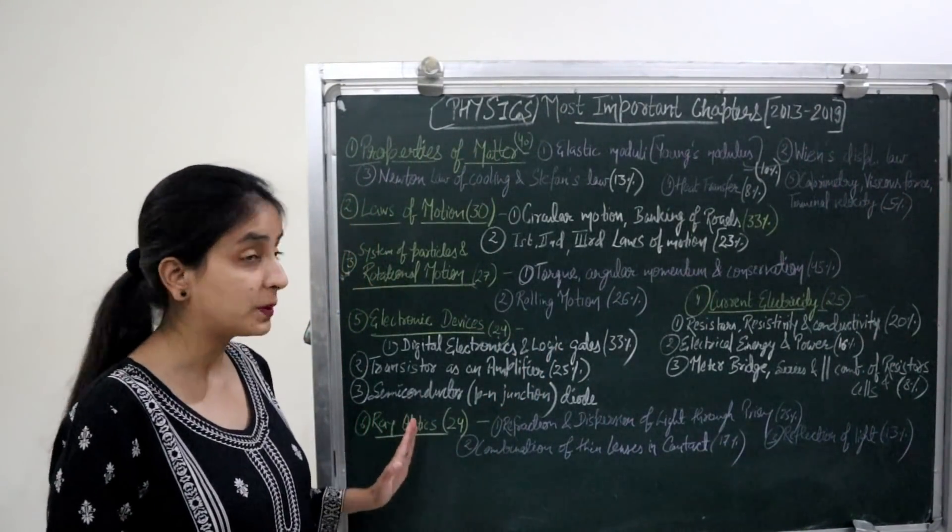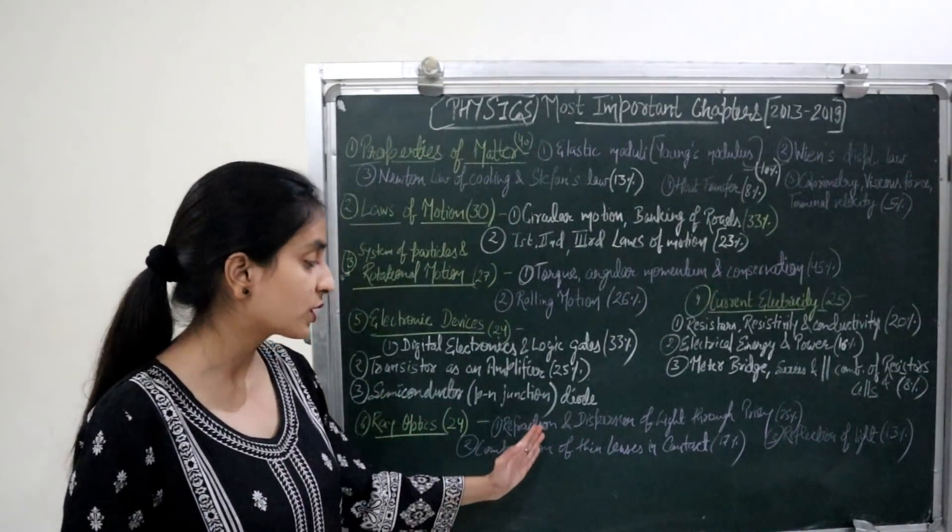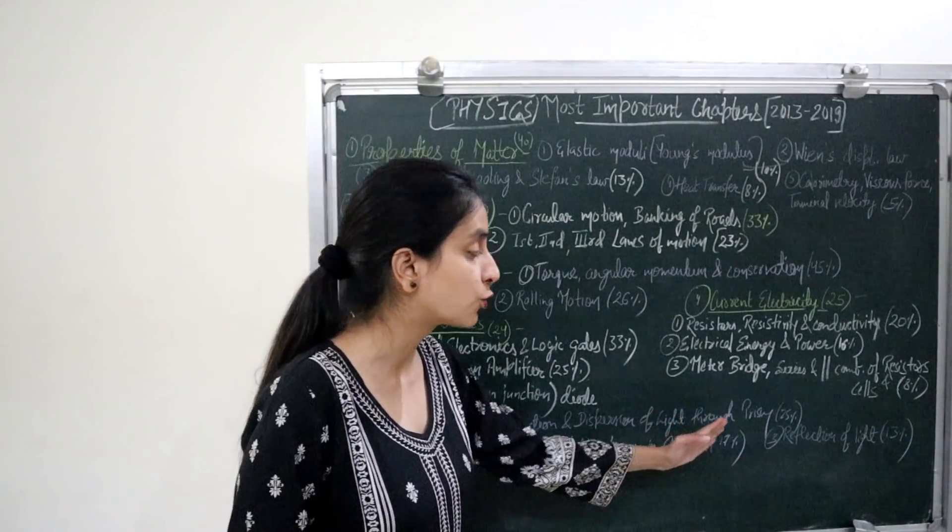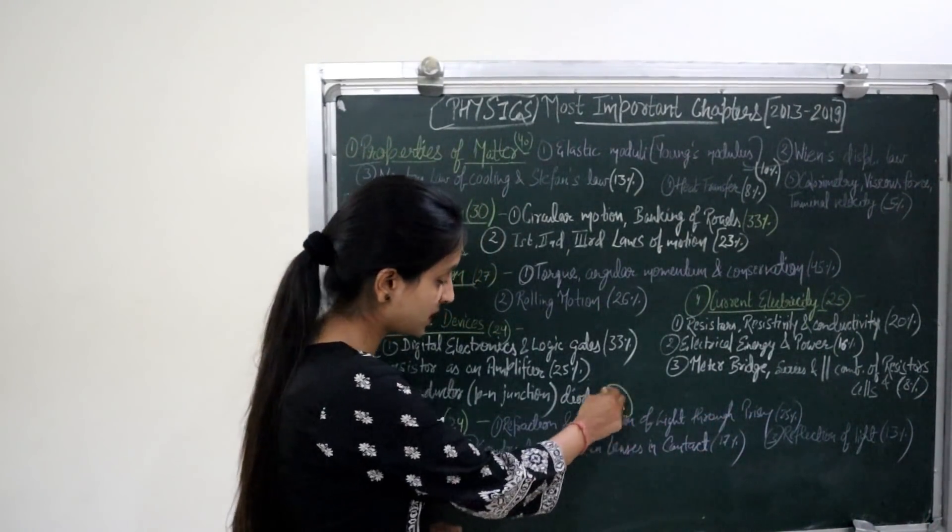Sixth, Ray Optics. 24 questions in the past 7 years in this chapter. Most important topics are Refraction and Dispersion of Light through Prism. 25% questions in this topic.